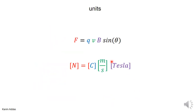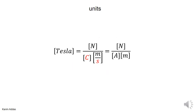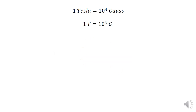The units of magnetic field are Tesla. If the force is in newtons, the charge is in coulombs, and the speed is in meters per second, then the units of the magnetic field will be Tesla. There is also another unit of magnetic field called the Gauss, and the relationship between the Tesla and the Gauss is just this conversion.